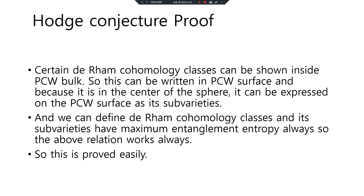Hodge Conjecture proof. Certain de Rham cohomology classes can be shown inside PCW bulk. So this can be written in PCW surface, and because it is in the center of the sphere, it can be expressed on the PCW surface as sub-varieties. We can define de Rham cohomology classes and sub-varieties to have maximum entanglement, so the above relation always holds. So this is the proof.